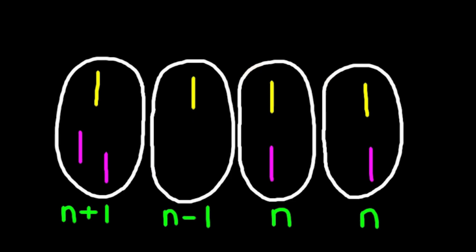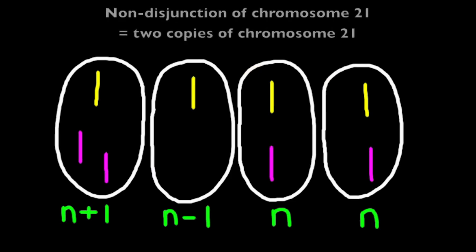Now if this nondisjunction were to occur in either meiosis 1 or meiosis 2 to chromosome number 21, this would result in one of the gametes having two copies of chromosome number 21.